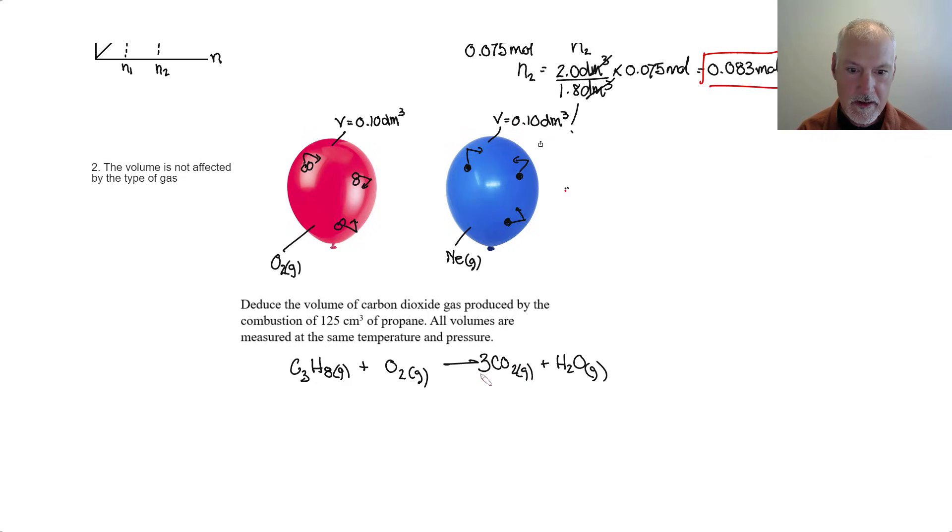Balancing it, we'll need three for the carbon dioxide, four in front of the water, and that will correspond to five oxygens. So we're told that this volume of gas is 125 cubic centimeters. I can see from the equation that it is going to produce three times the number of molecules. That means it's going to produce three times the volume, since the volume is independent of the type of gas. So I would expect 375 cubic centimeters of gas.